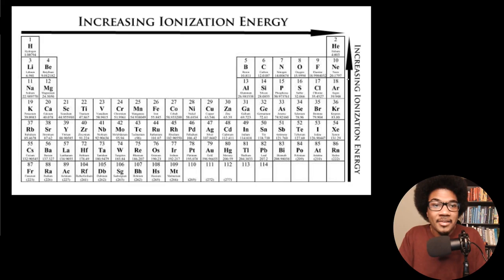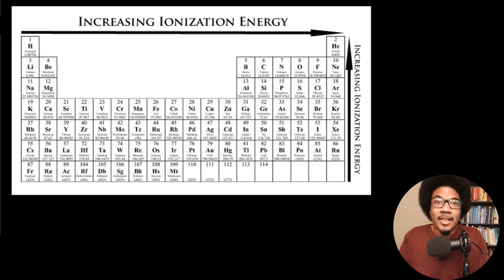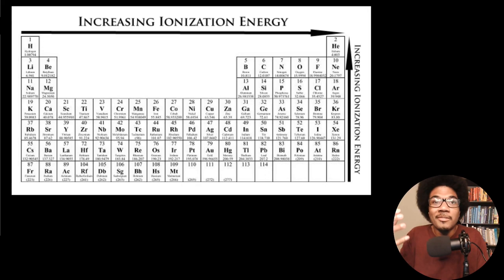Ionization energy decreases going down because the electrons become much further from the nucleus. Comparing helium to krypton, you're comparing the first principal quantum level to the fourth. That means the electrons are much further away from the nucleus — the principal quantum number gives you the size of the orbital. So comparing a 1s orbital to a 5s orbital, that 5s electron is much further from the nucleus and easier to ionize. This rationalizes the periodic trend we see for ionization energies.